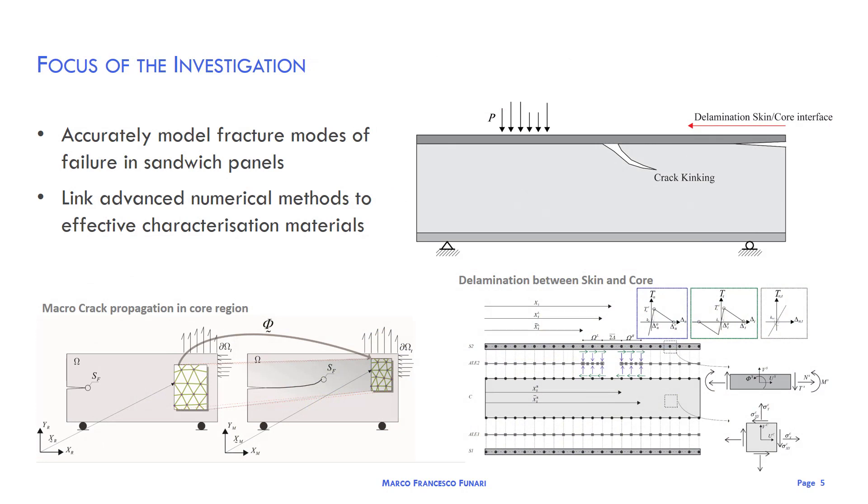As a matter of fact, sandwich panels are used under intensive loading conditions, so they can involve catastrophic failure modes. Typically in literature, two kinds of failure modes are analyzed: the delamination at the interface between the skin and the core, and the macro crack propagation in the core. The purpose of this investigation is to accurately model the fracture modes of failure in sandwich panels and link advanced numerical methods to effective characterization of materials.